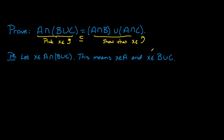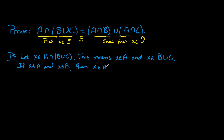Since X is in B union C, it's either in B or it's in C. If X is an element of A and X is an element of B, then X is an element of A intersect B.